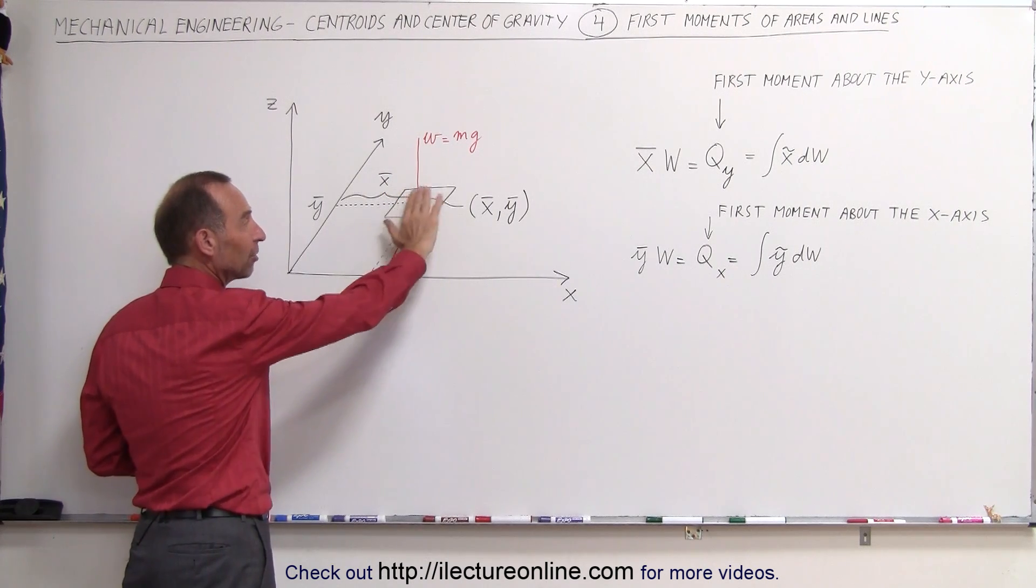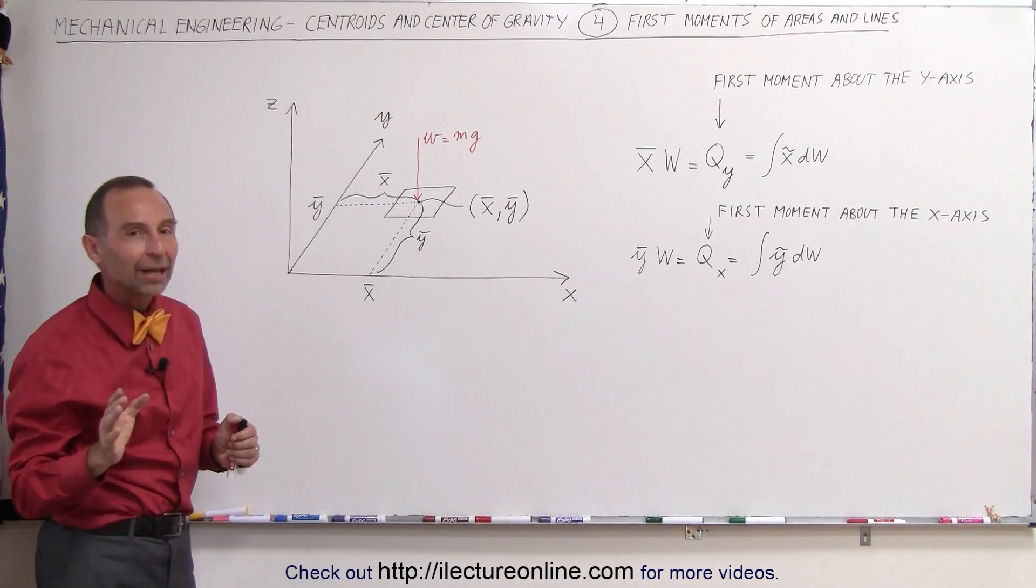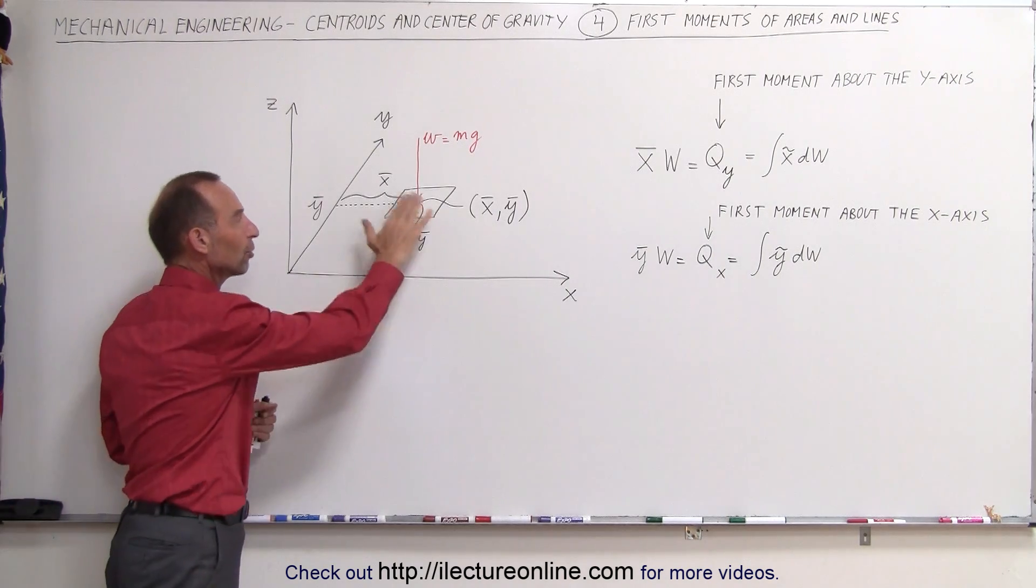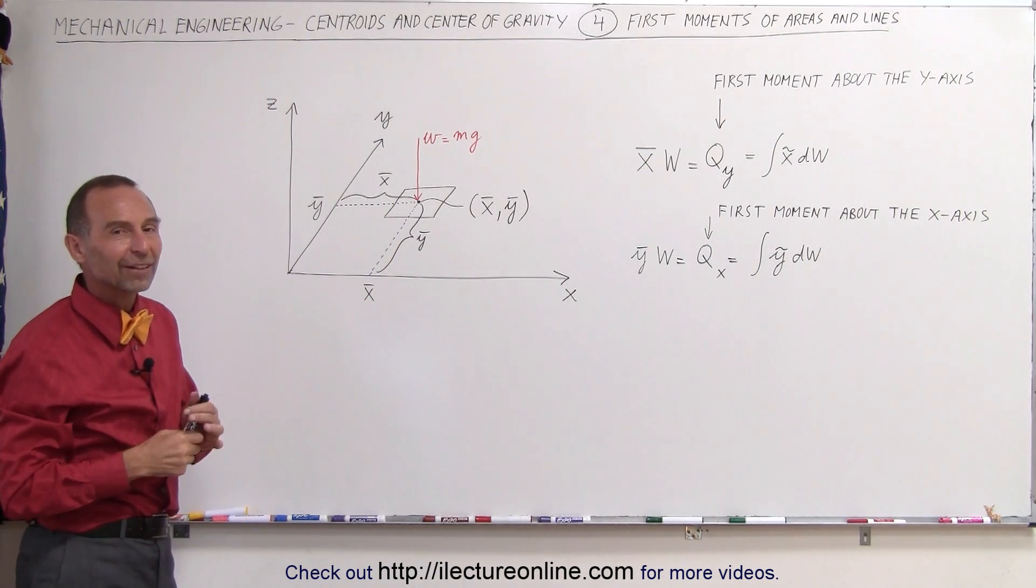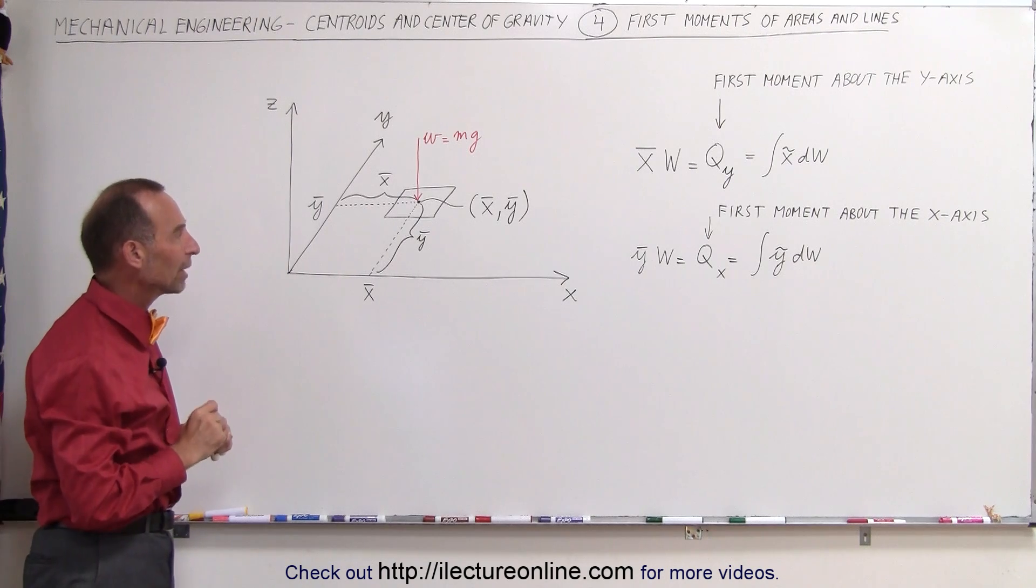It has weight, it also has a surface area. Remember that when we use centroid, we only care about the surface area. When we try to find the center of gravity, we do care about the weight of the object.